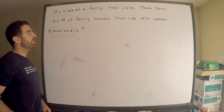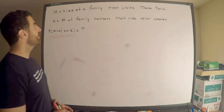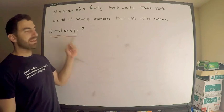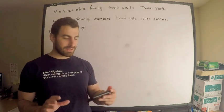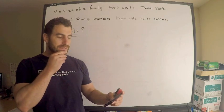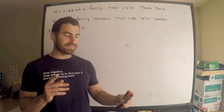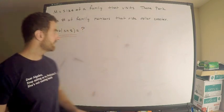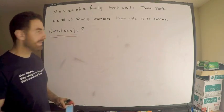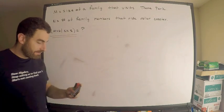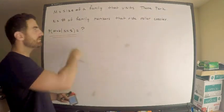We're interested in the probability that there are six family members given that M is five. Now let me read this question to you. It says calculate the probability that a family visiting the park has exactly six members given that exactly five ride the roller coaster. So hopefully that's clear to you. This is what we're looking for here.